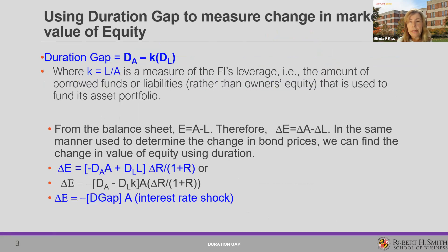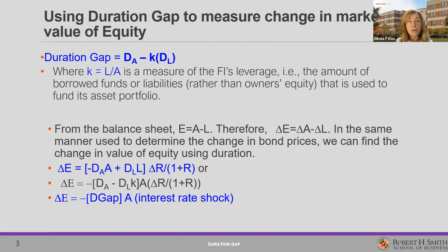We're going to measure something called the duration gap. When I worked at a couple of banks on the Asset Liability Committee, we measured our interest rate risk exposure with the repricing gap, and then moved to the duration gap. The duration gap is the duration of the assets minus K times the duration of the liabilities, where K is a measure of the bank's leverage — the amount of borrowed funds or liabilities rather than owner's equity used to fund its asset portfolio.